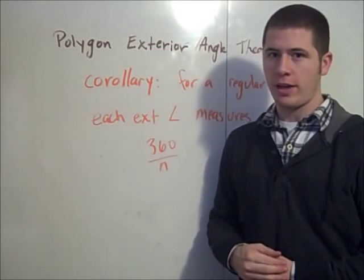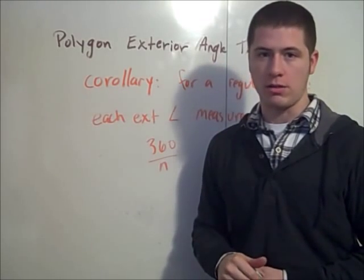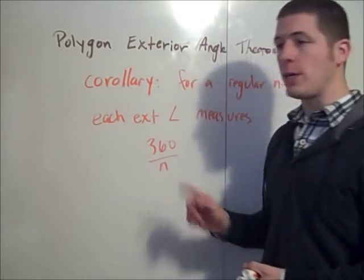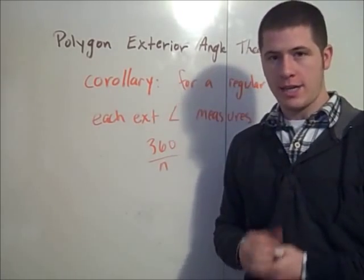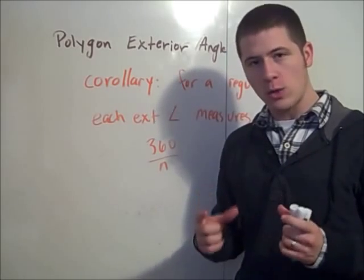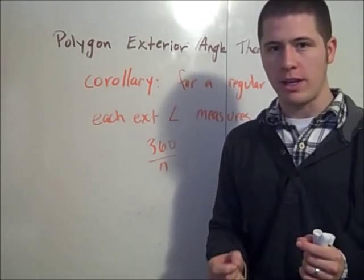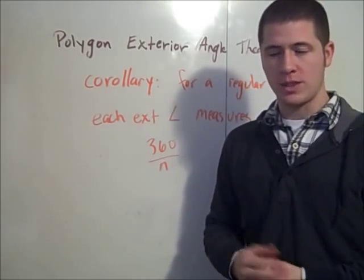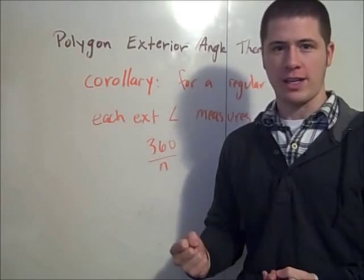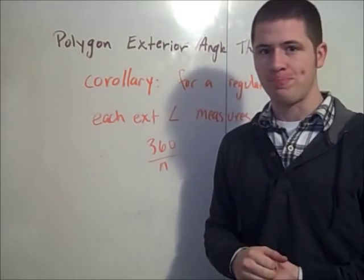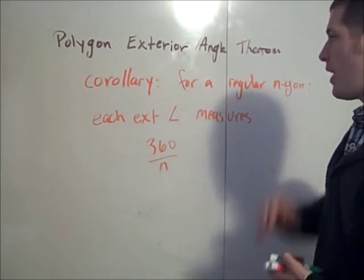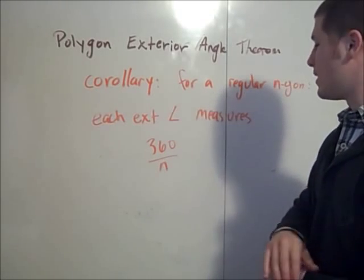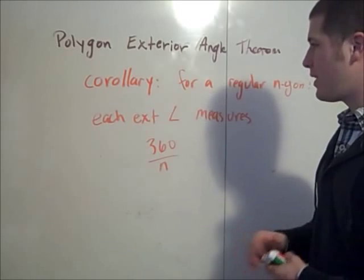For example, each exterior angle of a regular triangle — that is, an equilateral triangle — is going to be 360 over 3, which is 120 degrees. That makes good sense because for an equilateral triangle the measure of each interior angle is 60, and 60 plus 120 is 180, which is exactly what we would expect since the interior and exterior angles make a linear pair. So if you have a regular n-gon, the measure of each exterior angle is 360 over n — a very neat corollary.